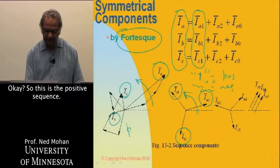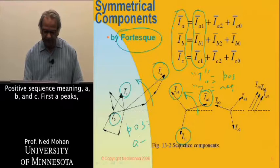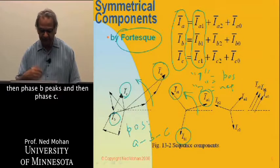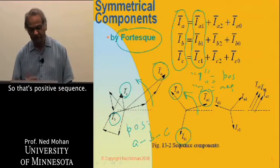Positive sequence meaning A, B, and C. First A peaks, then phase B peaks, and then phase C. That's positive sequence.